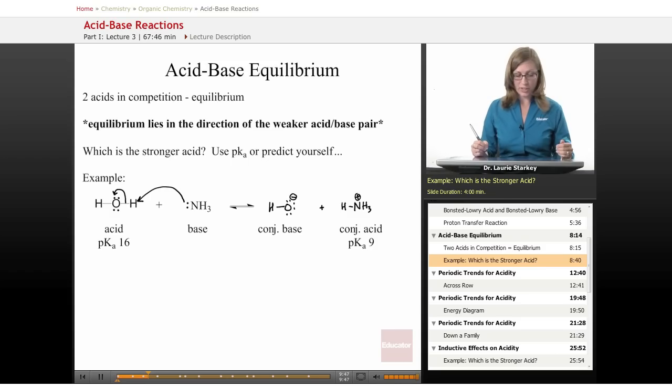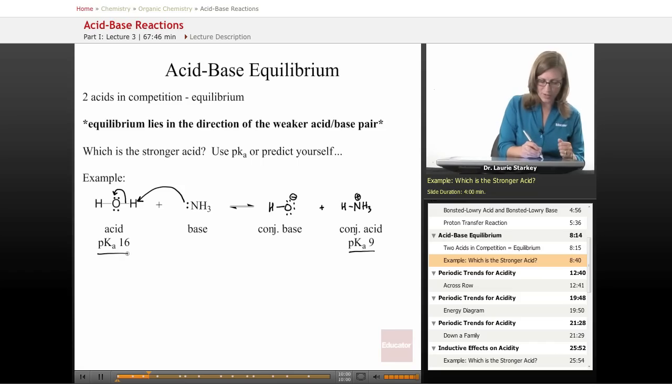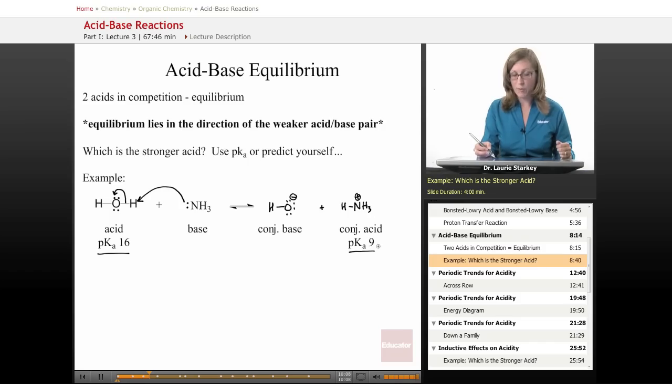So if we took a look at this equilibrium and asked in which direction does the equilibrium lie, does it lie in the forward direction or the reverse direction, what we can do is we can look up the pKa's of the two competing acids. In the forward reaction, water has a pKa of about 16. In the reverse reaction, the ammonium is the acid, and that has a pKa of about 9.